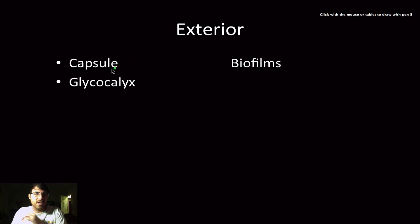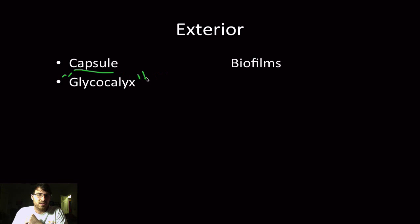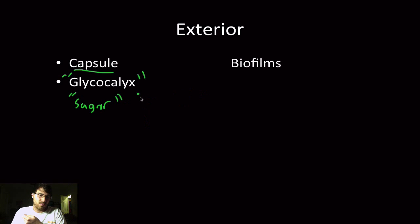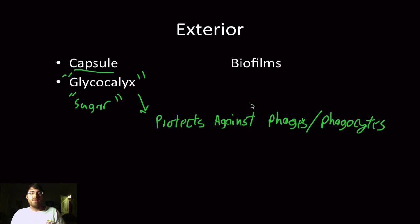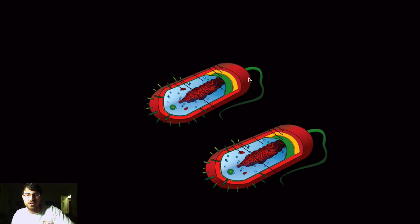On the exterior, some bacteria can form capsules — sometimes more accurately called a glycocalyx because it is a sugar-based compound. When performing a capsule stain, you do not heat-fix the sample. The capsule protects against bacteriophages and phagocytes, keeping the bacteria well protected. Bacteria with capsules can clump together to form a biofilm.